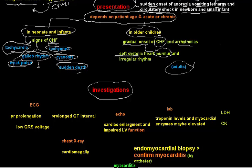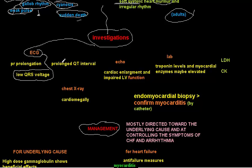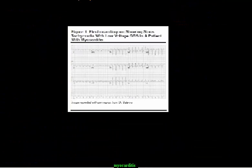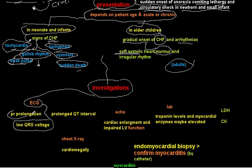Investigation is directed mostly toward heart function. On ECG, the most important finding in myocarditis is low QRS voltage. You may also see PR prolongation or prolongation of the QT interval, but low QRS voltage is the most important ECG finding.